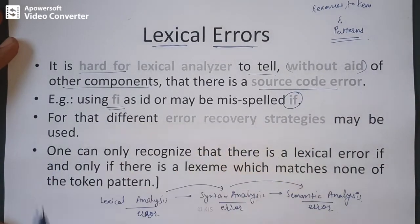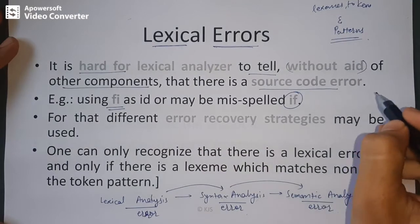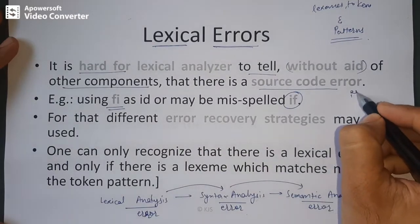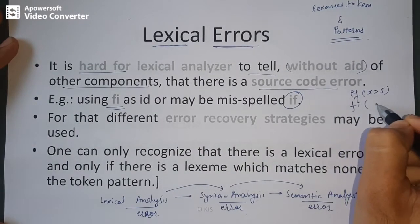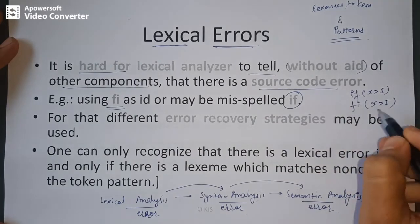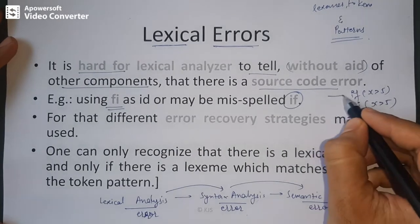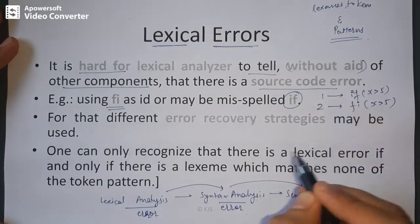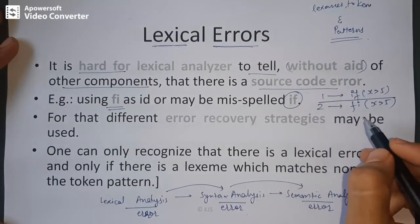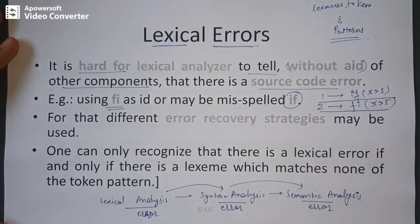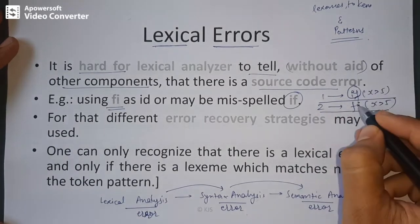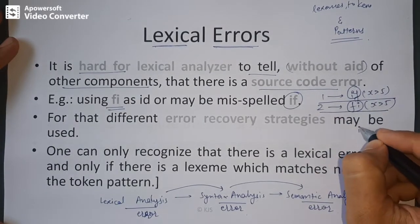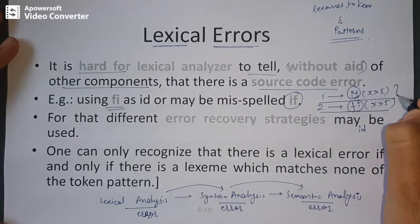For example, if you write 'if x is greater than 5' that is correct, but if you write 'fi x greater than 5' — that is the wrong version. The lexical analyzer cannot differentiate between them, because 'if' is a keyword but 'fi' is treated as an identifier.